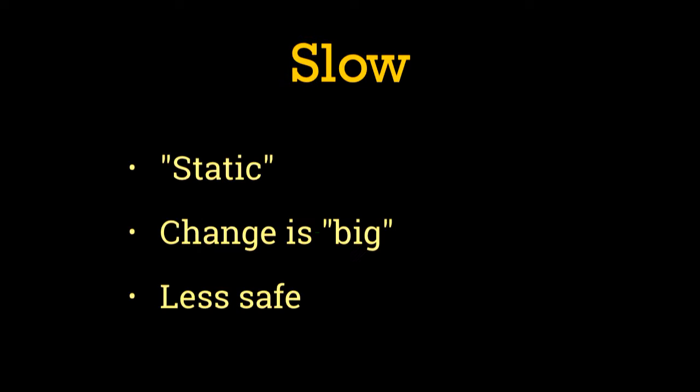Within online or hot secrets, there's another subspectrum related to how often the secret changes. Most traditional hot secret management systems are built around slow secrets. Once set, a secret usually only changes because of an emergency — like some kind of compromise — or to comply with industry regulations like PCI DSS, which says you have to rotate your keys every six months. The biggest example is TLS keys and certificates. They change maybe every year or two, and day to day you treat them as relatively static data.